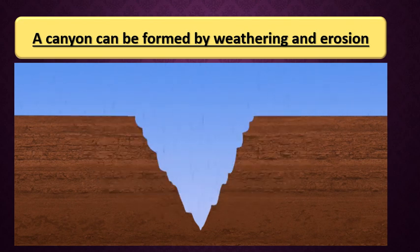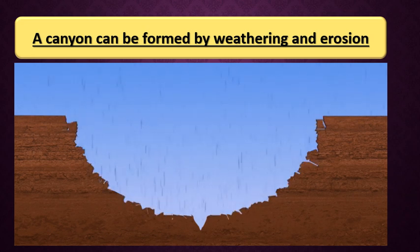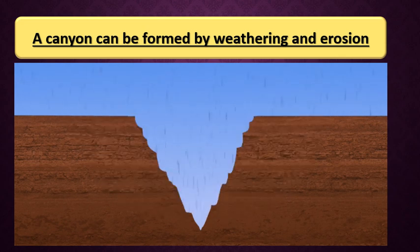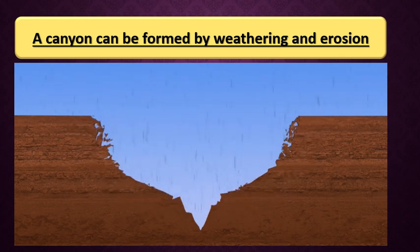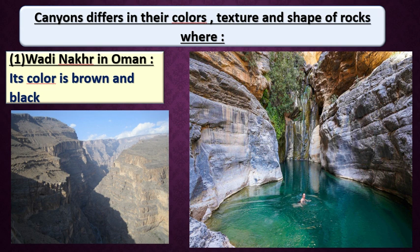Not all canyons have the same shape, the same rock, or the same colors. Canyons differ in shape and colors. Today we will take four examples. The first canyon is Wadi Nahr in Oman. This canyon's color is brown and black. Looking at the picture, the upper layer is brown but the lower one is black or gray. So this canyon has two colors: brown and black.